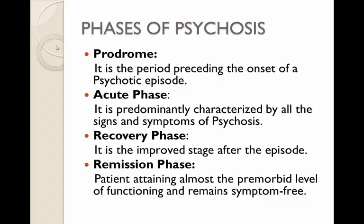Psychosis normally occurs across phases. There is a prodrome — the period preceding the onset of a psychotic episode. An acute phase, predominantly characterised by all the signs and symptoms of psychosis, with active hallucinations and delusions. A recovery phase, where people are improved after the episode. And a remission phase, where the patient may be almost back to the level of their pre-morbid functioning and are symptom-free.